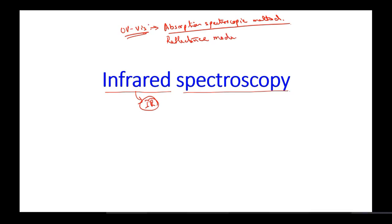As with UV-visible spectroscopy, where we could use it in the absorption mode or the reflectance mode, similarly in infrared spectroscopy also, we can have attachments such that the IR spectroscope can work in the absorption mode or the reflectance mode. Since it is an absorption spectroscopy, the basic instrumental functions remain the same. However, there is a slight change in the mechanism — how the peaks are being detected.